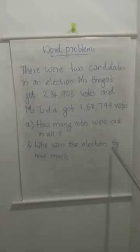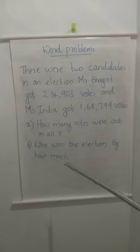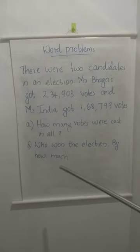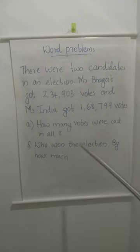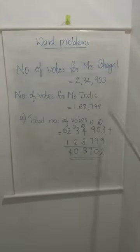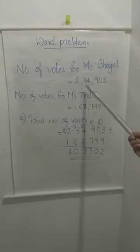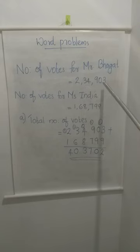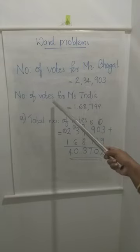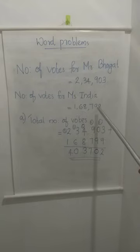There is one more part to that question: by how much? So by how many more votes did Bhagat win the election? How can you find that? Yes, by subtracting. So first, writing what is given: number of votes for Mr. Bhagat — 2,34,903. Number of votes for Miss India — 1,68,799.